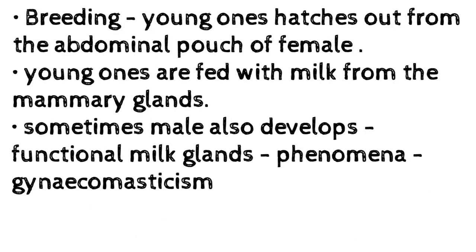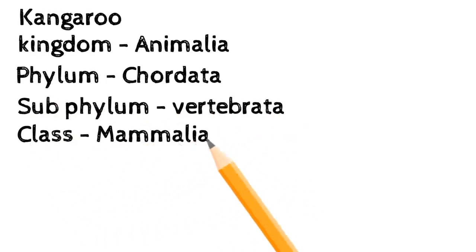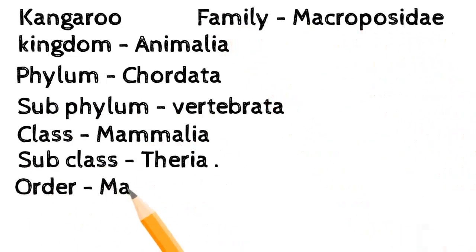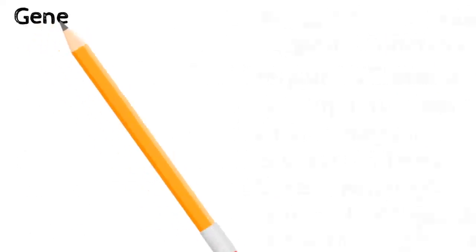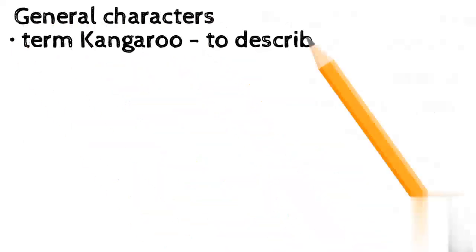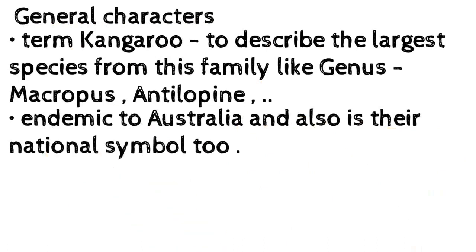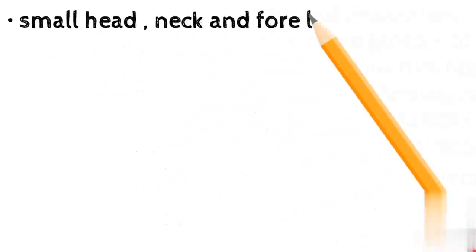Kangaroo — Kingdom: Animalia; Phylum: Chordata; Sub-phylum: Vertebrata; Class: Mammalia; Sub-class: Theria; Order: Marsupialia; Family: Macropodidae; Genus: Macropus. The term 'kangaroo' describes the largest species of this family. Genus Macropus is endemic to Australia and is their national symbol. Herbivore and terrestrial; 'Macropus' means large foot.